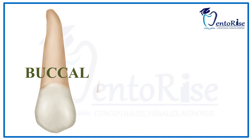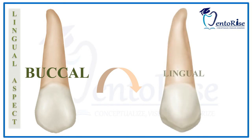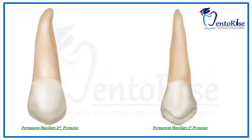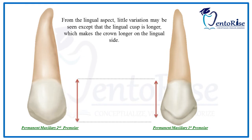Now let's discuss the lingual aspect of this tooth. From the lingual aspect, the lingual cusp in a permanent maxillary second premolar is longer in length than the lingual cusp of permanent maxillary first premolar, which makes the crown longer on the lingual side. Please observe the difference in the length of the lingual cusp of both teeth on the screen — it is very well evident in the figure.